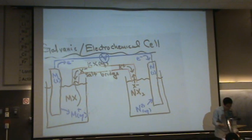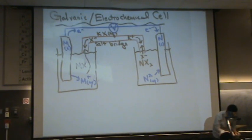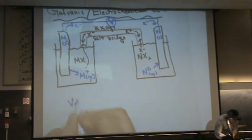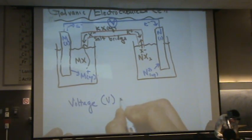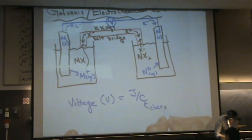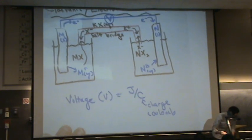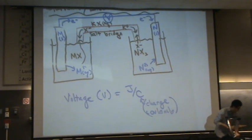And this is the galvanic electrochemical cell. So you would measure right here voltage. And just to note that voltage V is a joule per coulomb. This is a charge unit and it's called a coulomb. And that measures what's called the cell voltage.